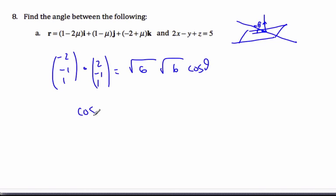And so the cosine of theta is equal to negative 4 plus 1, negative 3, plus 1 more is negative 2 over 6.